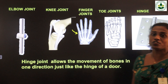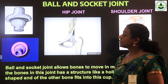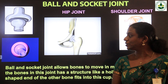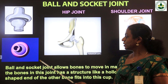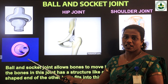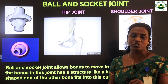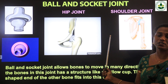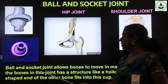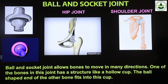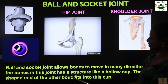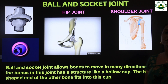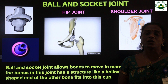Hinge joint allows the movement of bones in one direction, just like the hinge of a door. Next is ball and socket joint. As the name suggests, one bone acts as a hollow socket and the other bone acts as a ball that fits into that socket. We mainly see this in the hip joint and shoulder joint. Ball and socket joint allows bones to move in many directions. One of the bones has a structure like a hollow cup, and the ball-shaped end of the other bone fits into this cup.